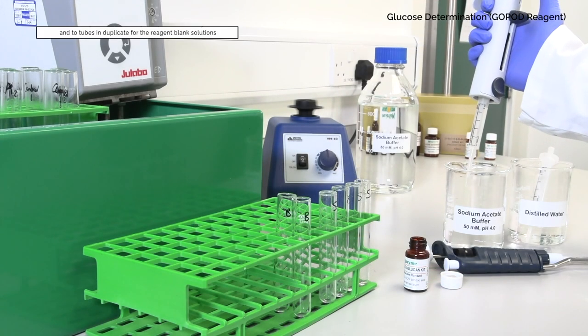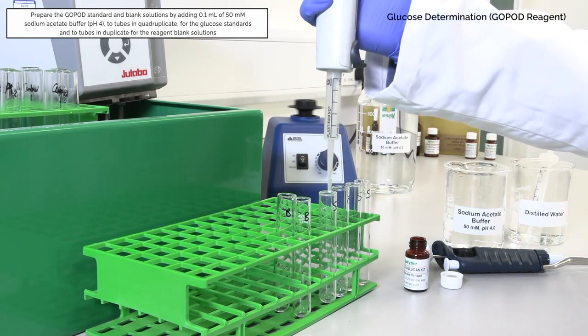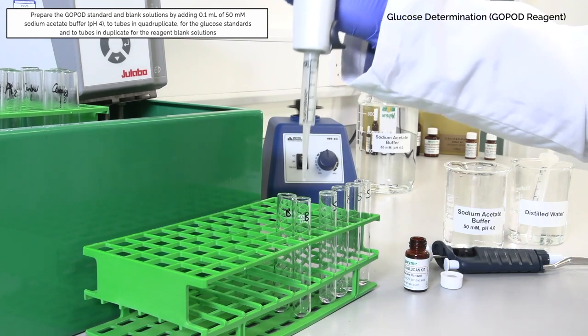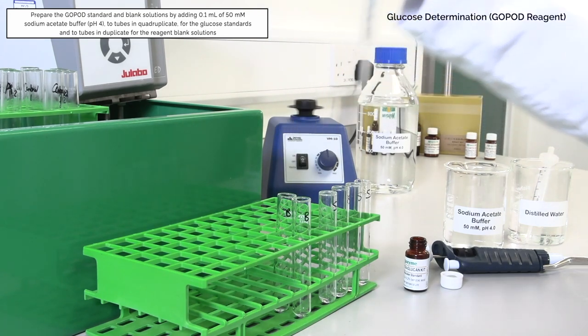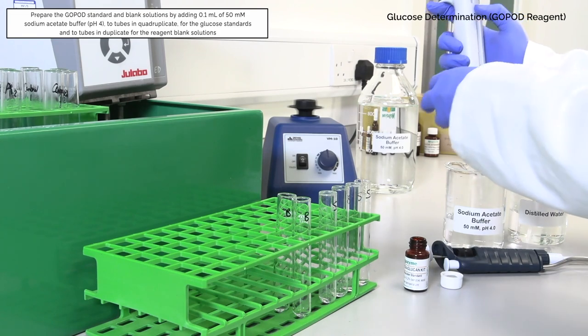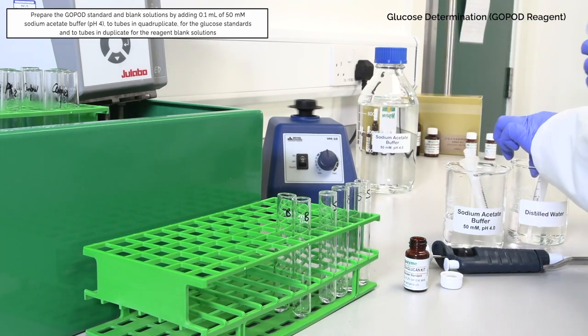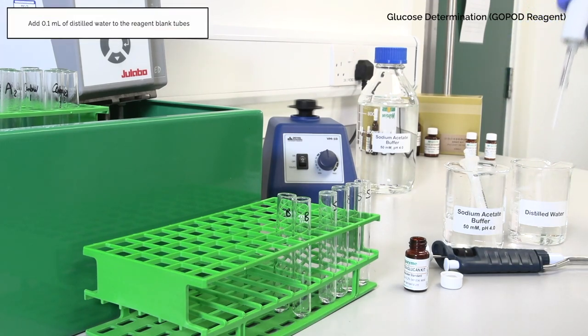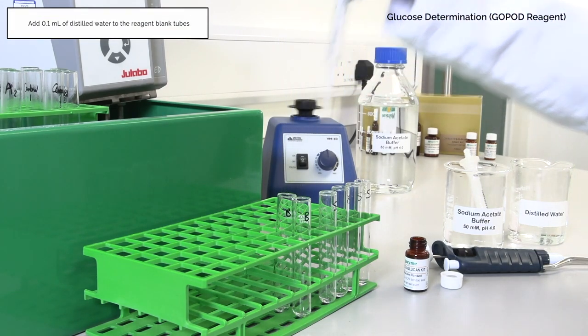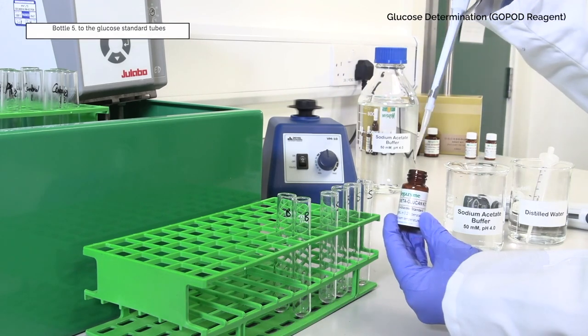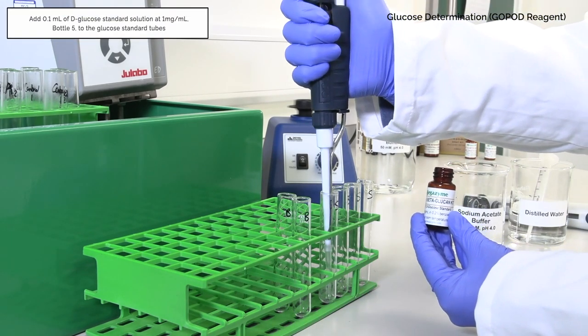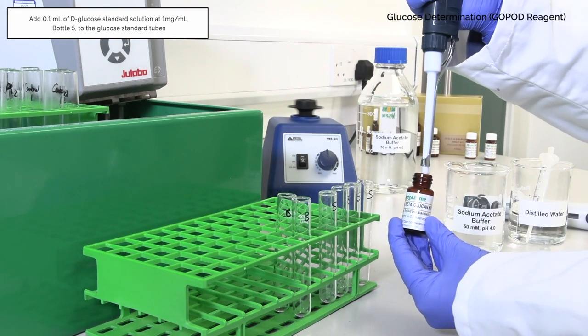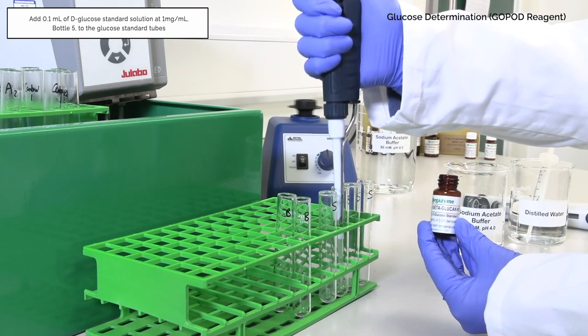During the incubation period, prepare the GOPOD standard and blank solutions by adding 0.1 milliliter of 50 millimolar sodium acetate buffer pH 4 to tubes in quadruplicate for the glucose standards and to tubes in duplicate for the reagent blank solutions. Subsequently, add 0.1 milliliter of distilled water to the reagent blank tubes and 0.1 milliliter of the glucose standard solution at 1 milligram per milliliter, bottle 5, to the glucose standard tubes.